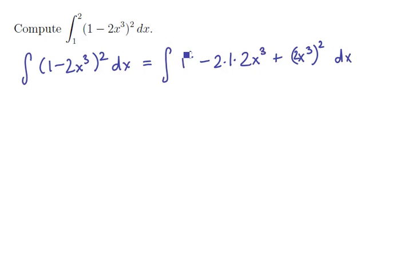If we work out each of these pieces we're going to have the antiderivative of 1 - 4x³ + 4x⁶ dx. Now we can focus on integrating each piece right here.